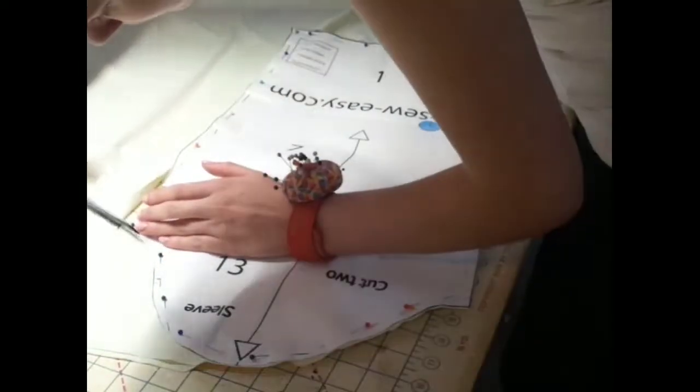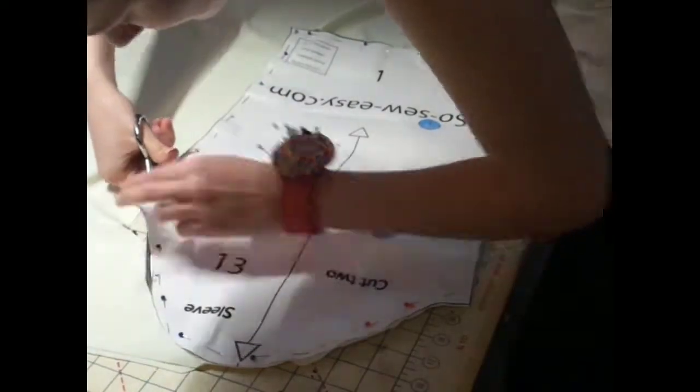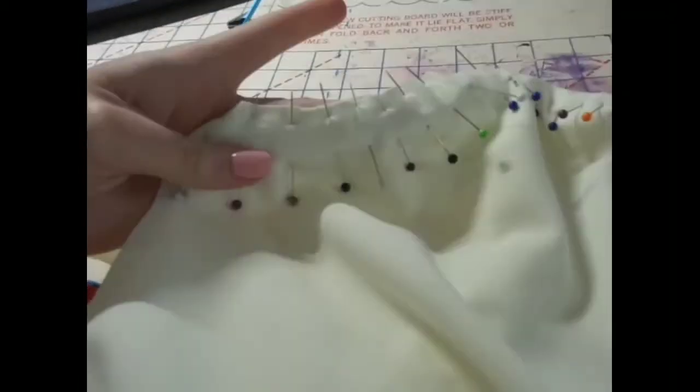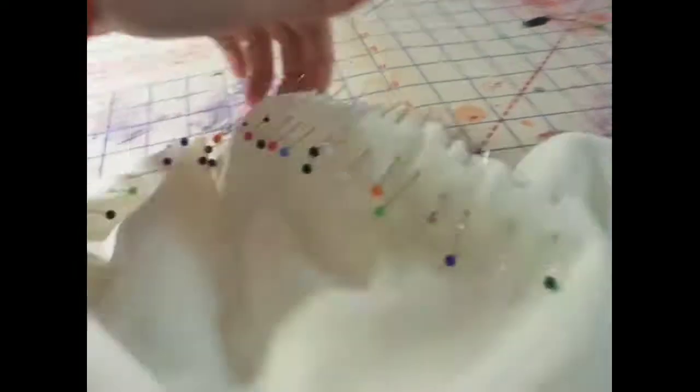I didn't show it in the video, but once I had all my pieces, I pinned and sewed the shoulder seams together. And once I had that, I then pinned the sleeves into place and then sewed them in.